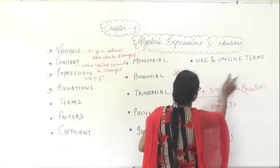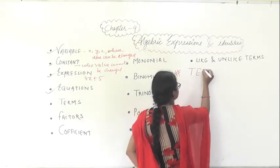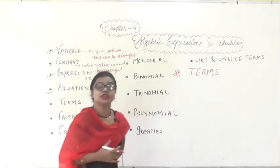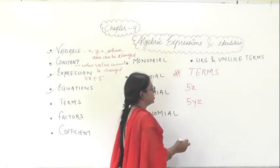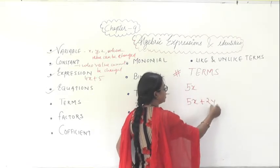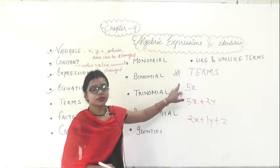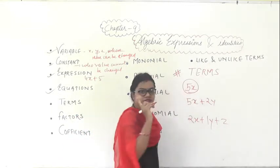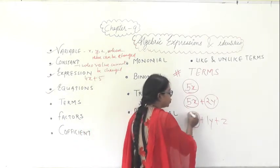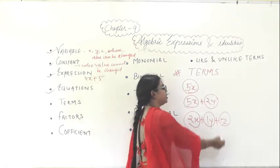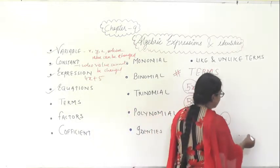The next topic is terms. If I write 5x, this is a single term — one term. If I write 5x plus 2y, these are two terms. If I write 2x plus 1y plus z, there are three terms. So these are what we call terms, and similarly it will go on.